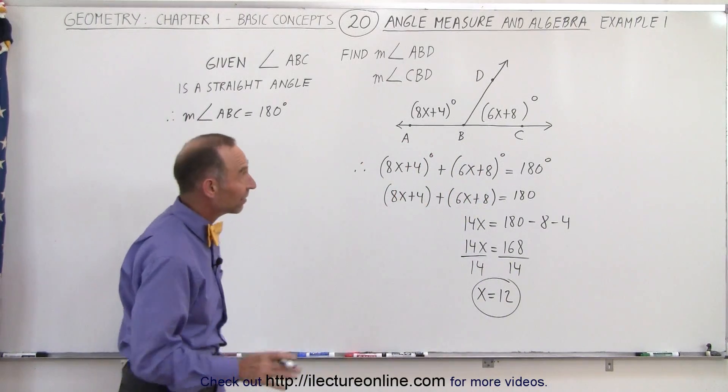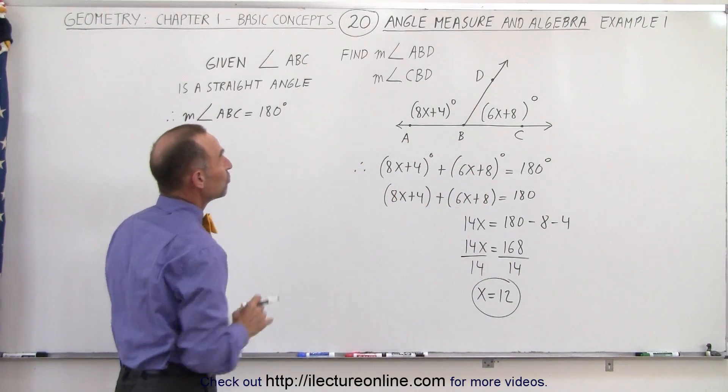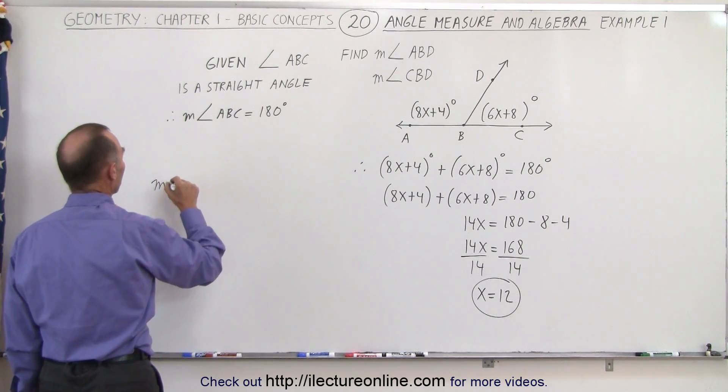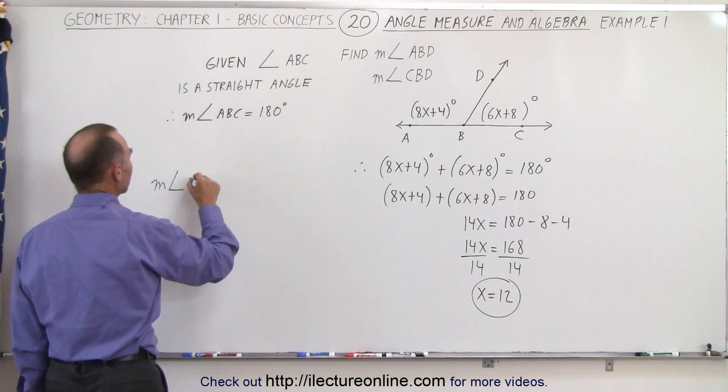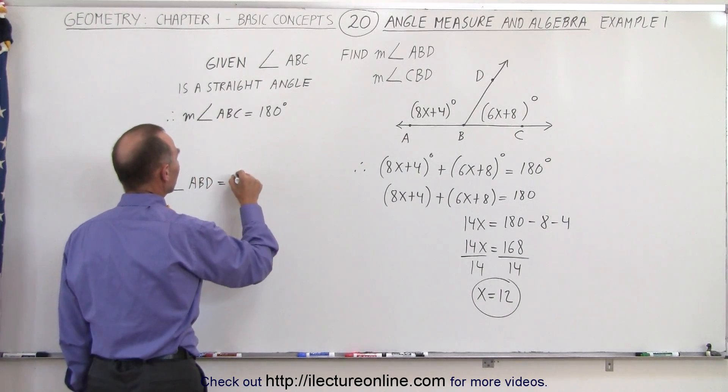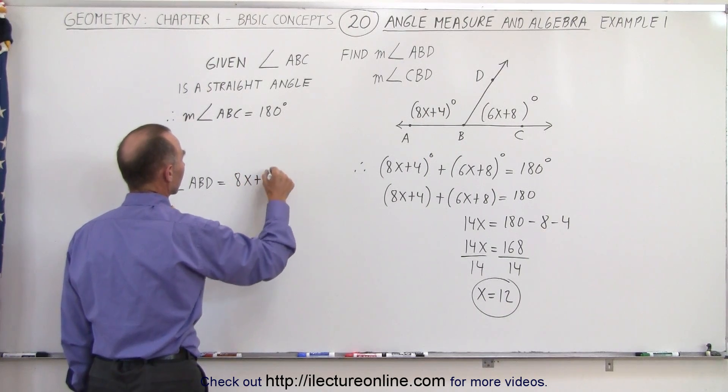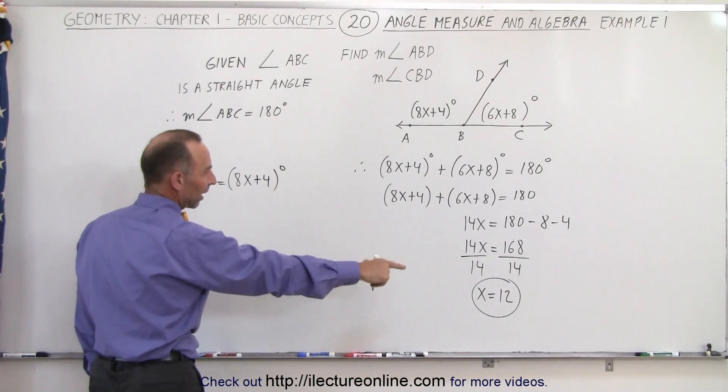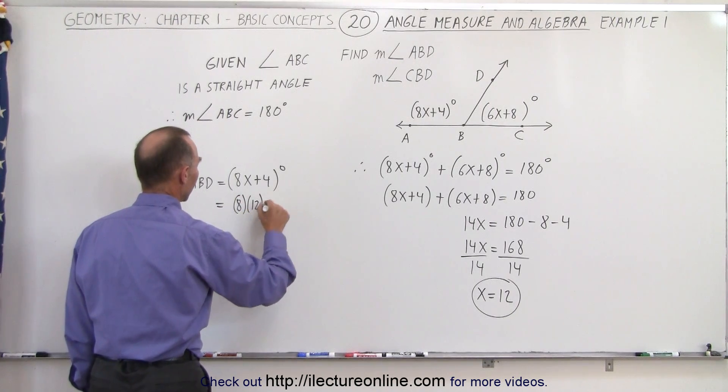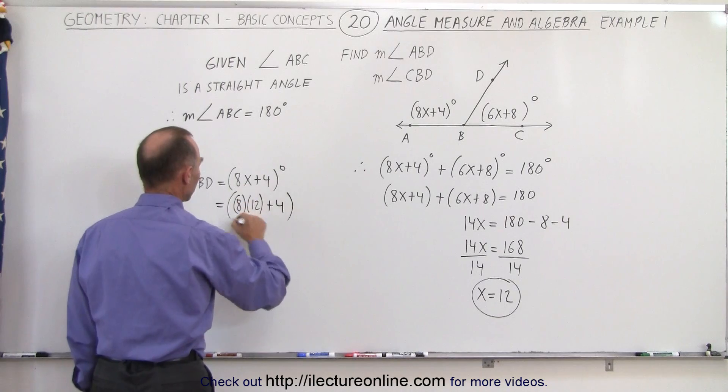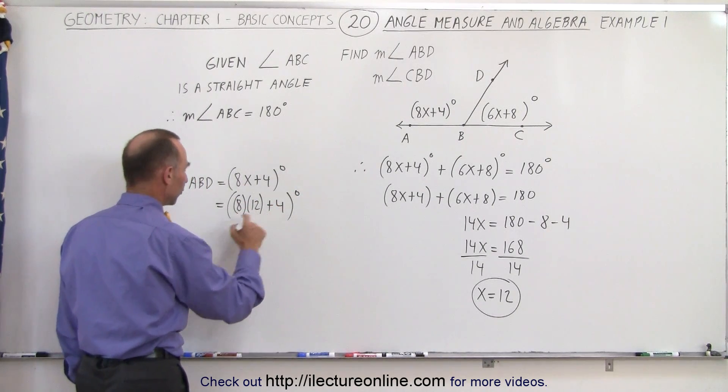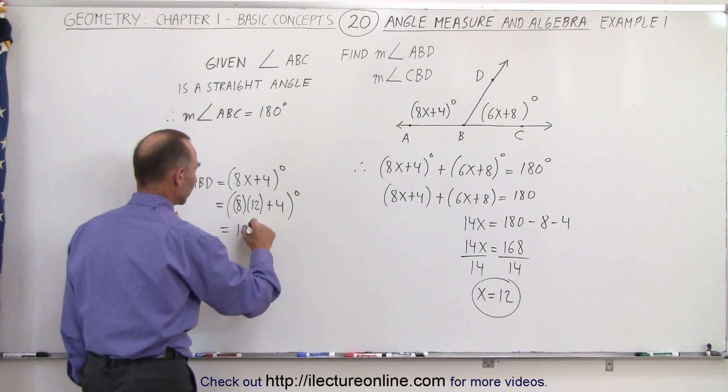Now that we know what the value for x is, we can find the value for the two measures of the two angles. The measure of angle ABD is equal to 8x plus 4 degrees. Since x is equal to 12, that's equal to 8 times 12 plus 4. 8 times 12 is 96 plus 4, that's equal to 100 degrees.